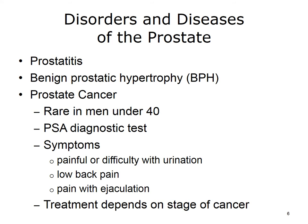Some common problems with the prostate include these disorders and diseases. Prostatitis is an infection of the prostate gland, usually caused by bacteria. Benign prostatic hypertrophy, or BPH, is an enlargement of the prostate gland commonly seen in males over 50. Symptoms include dribbling after urination and frequent urination, especially at night. Possible treatments include resection of the portion of the gland that is obstructing the urethra.